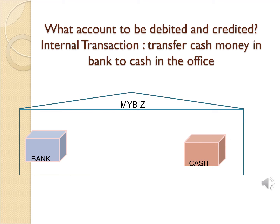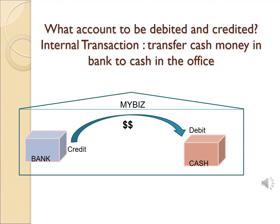For internal transactions, such as transferring cash from the bank to the cash-in-hand account at the office: there is an outflow from the bank, so we credit the bank account. There is an inflow to cash in hand, so we debit the cash account.